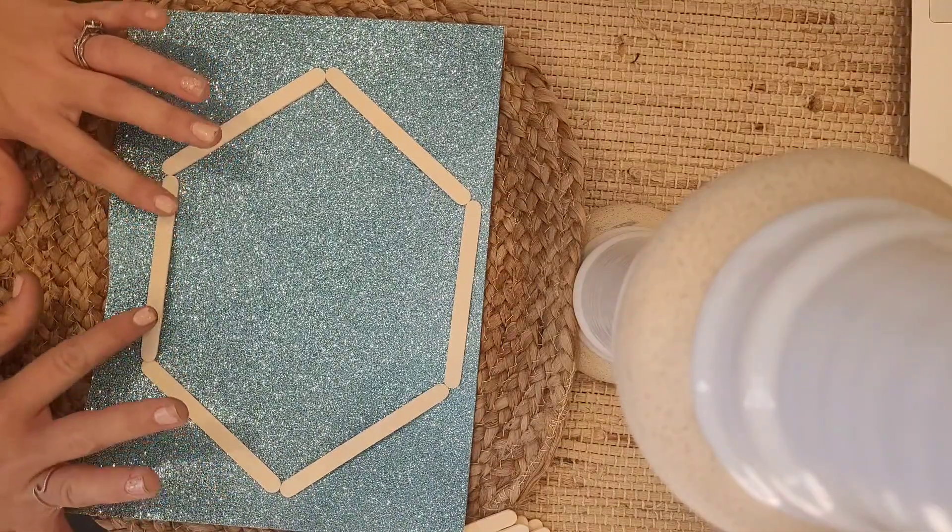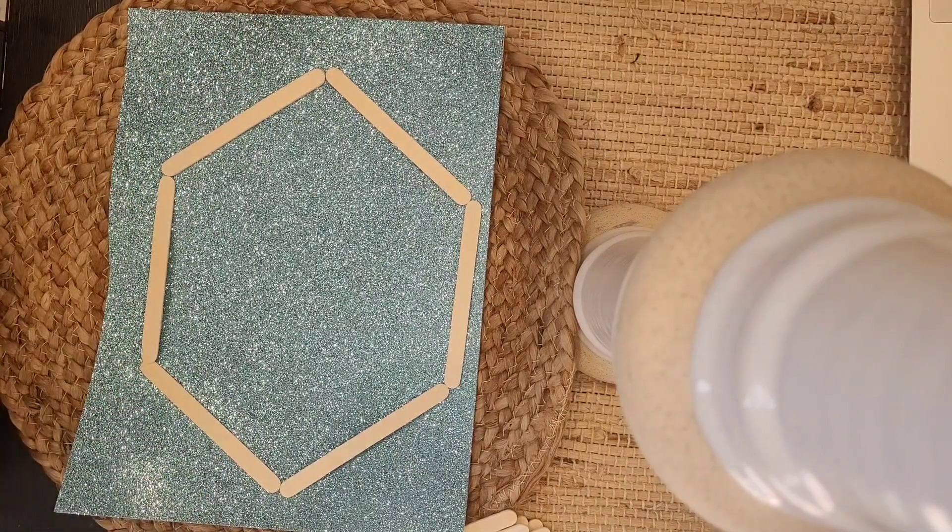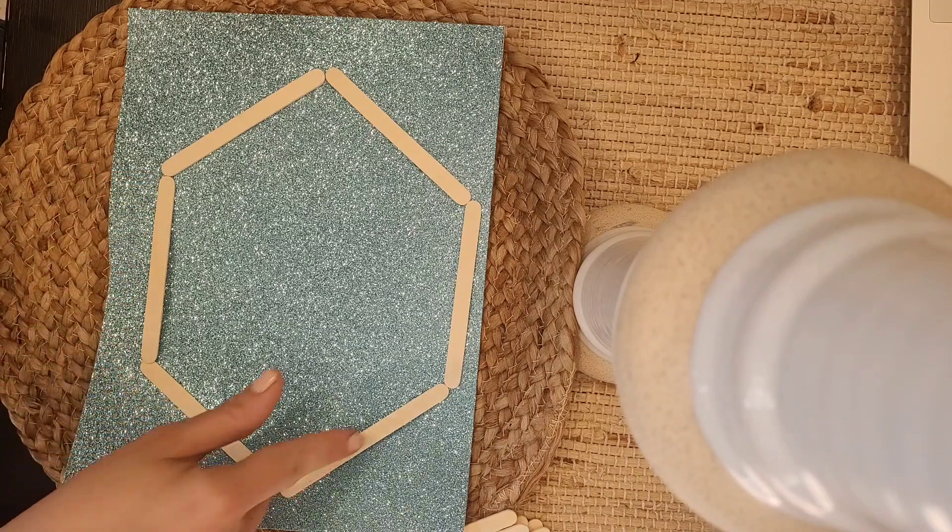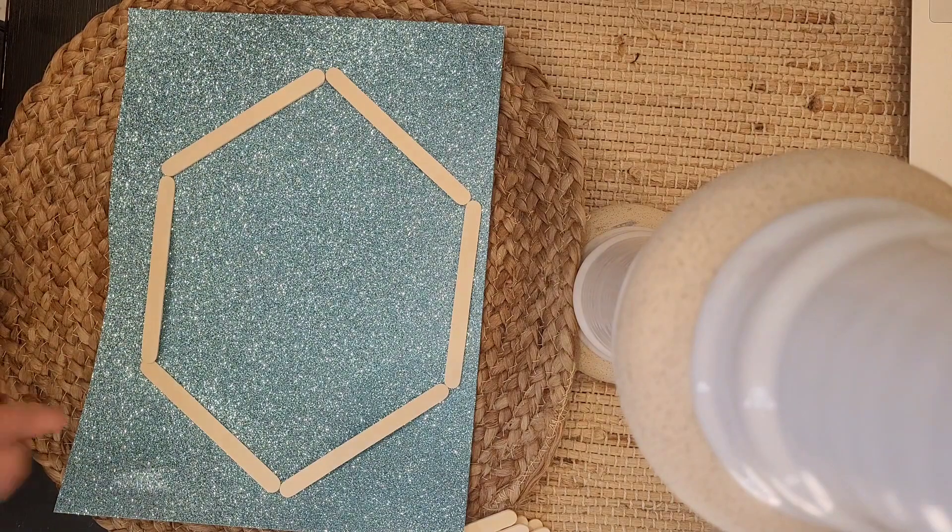Now, we might have to adjust some because it's not perfect. But there's our hexagon. Let's double check and make sure our math is correct. So we have one, two, three, four, five, six sides or six line segments.